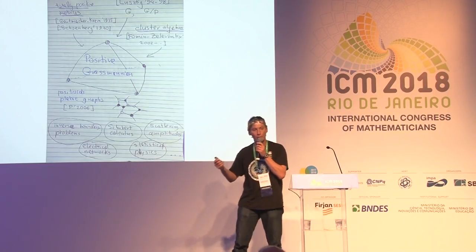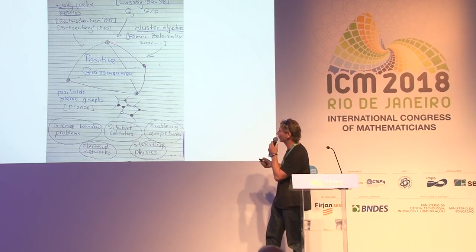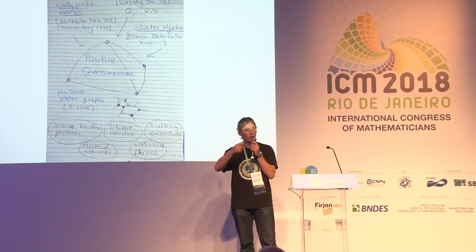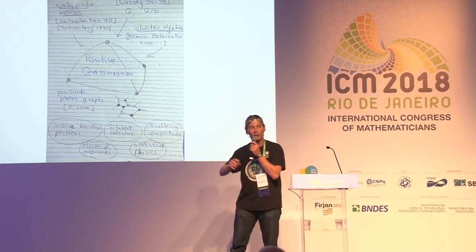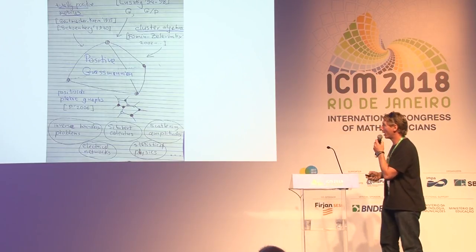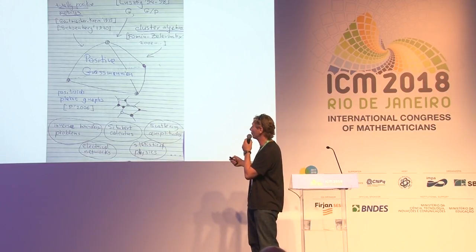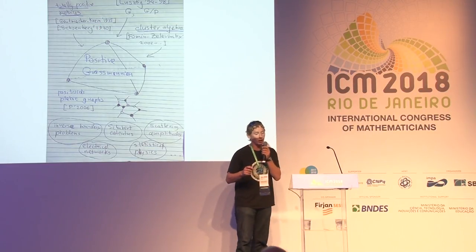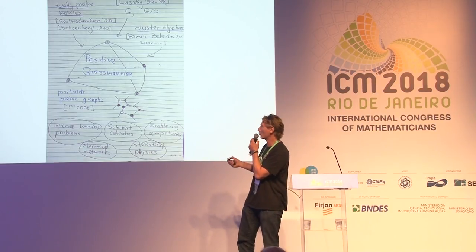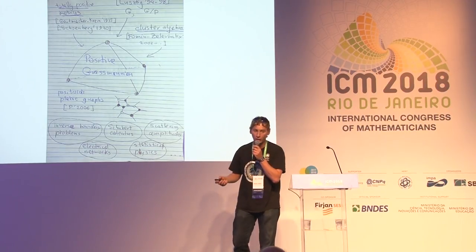The positive Grassmannian is a certain geometric object with structure similar to a polytope — it has vertices, edges, and faces — but it's not exactly a polytope. In a polytope, all edges are straight lines and all faces are planes; here the edges are curved lines, so this is a kind of curvy polytope. It is related to the notion of totally positive matrices: real matrices such that every determinant of every square submatrix is positive. These objects were initially defined in the 1930s by Gantmacher, Krein, and Schoenberg, and they appeared in many different areas of mathematics.